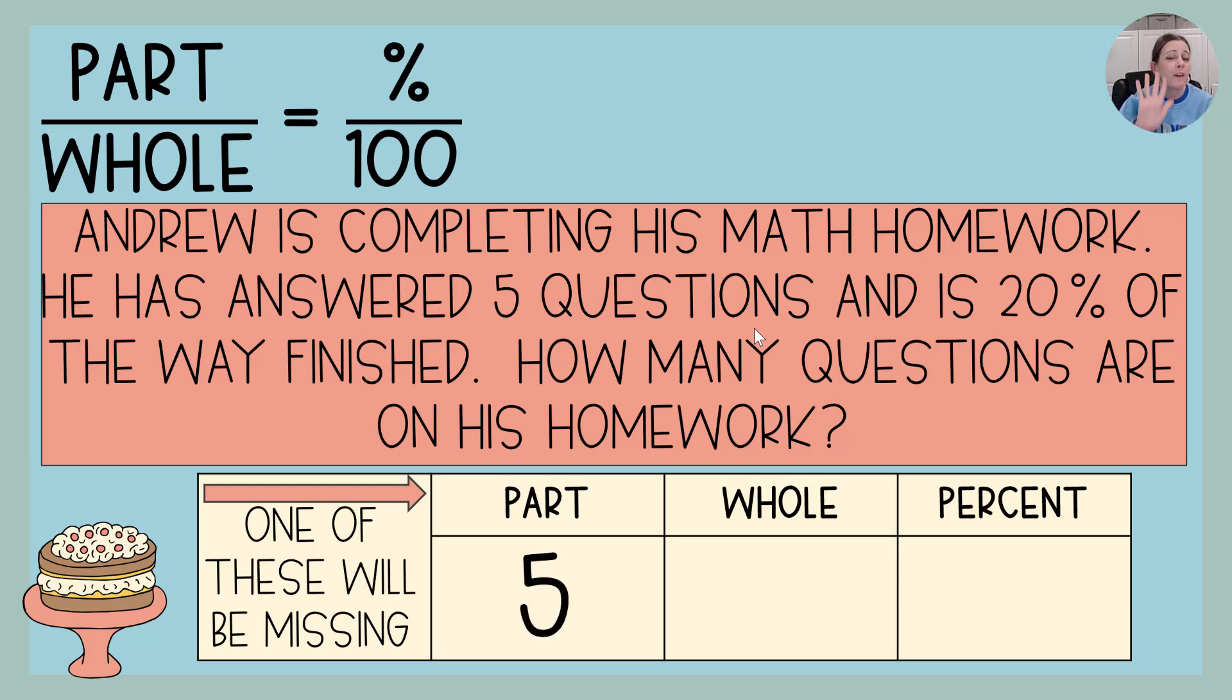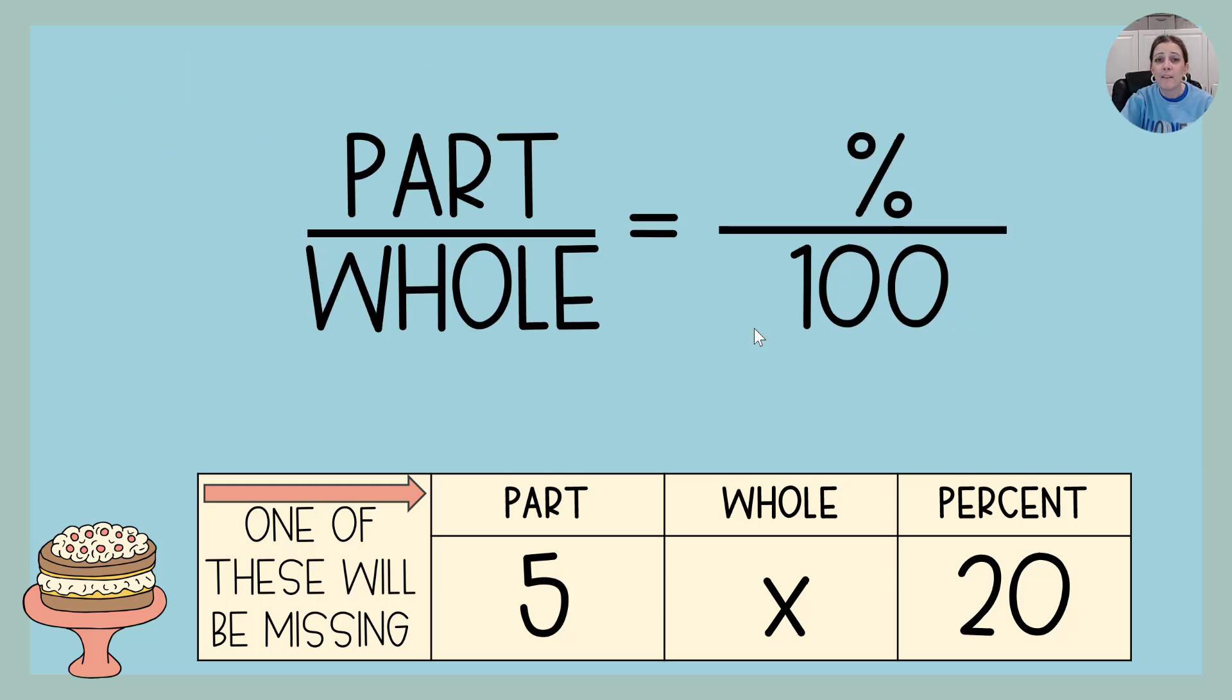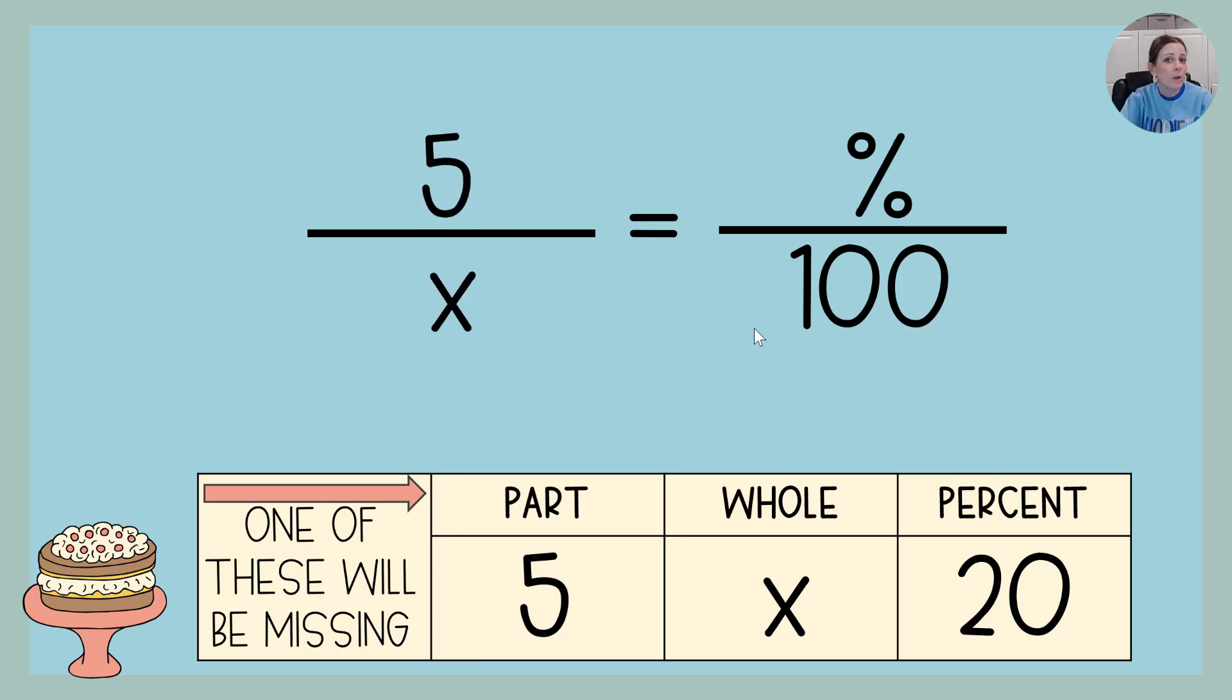What is the part in this one? You got it. It's five questions. That's the part of his homework he has completed. The whole is the unknown. That's what we're trying to figure out, and percent, it says he's 20% of the way through. So we're going to take that information, and we're going to plug it in to our equivalent ratios. So the part was five, the whole was X, we don't know, and the percent is 20.